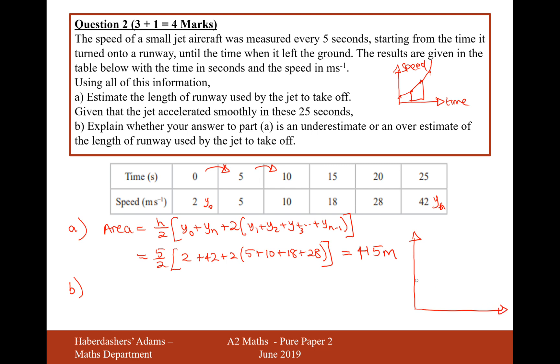Let's draw this graph a bit clearer. It starts at 2, then it goes to 5, then 10, then 15, 18, and 20, 28, and 25, 42. So the graph, if it's accelerating smoothly, is going to be doing something like that. But if I draw my trapeziums on the graph, then it's clear here that my actual line is going to be underneath the trapezium lines.